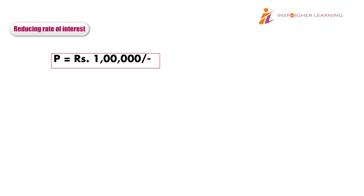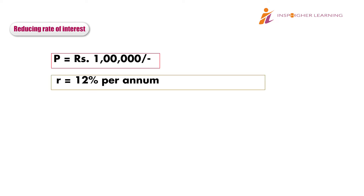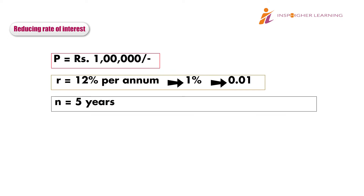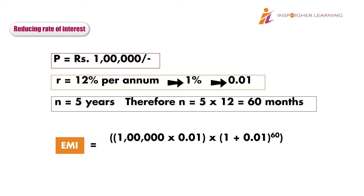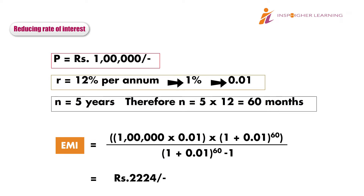In this formula, P stands for the loan principal, which in our example is 1 lakh rupees. Small r is the monthly interest rate — in our example, the annual interest rate was 12%, therefore the monthly rate, small r, is 1%, which equals 0.01. The tenor in our example was 5 years, which translates to 60 months — this is small n. Substituting these values into the formula, we get an EMI of 2,224 rupees.